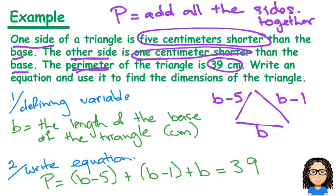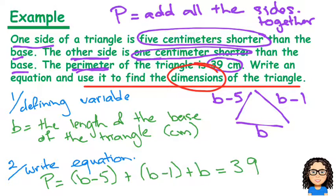But going back to the question, it says find the dimensions of the triangle. We need to know how long each of the three sides are. One side is 15 centimeters. The second side is 15 - 5, so that's 10 centimeters.